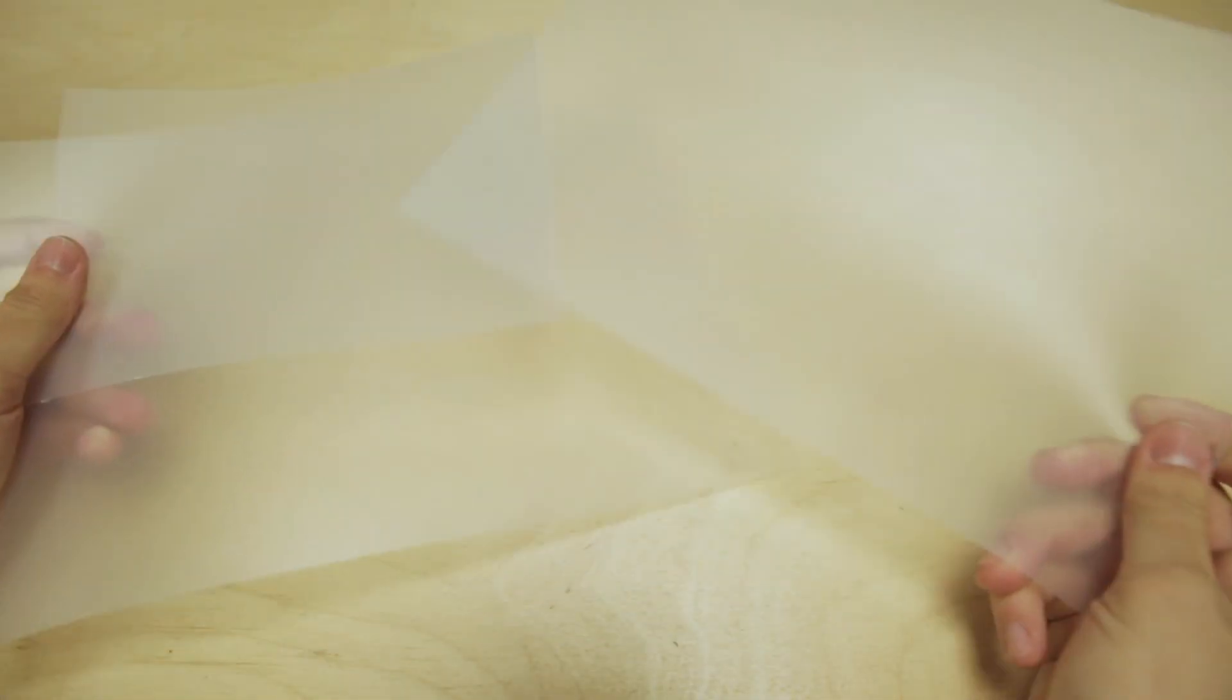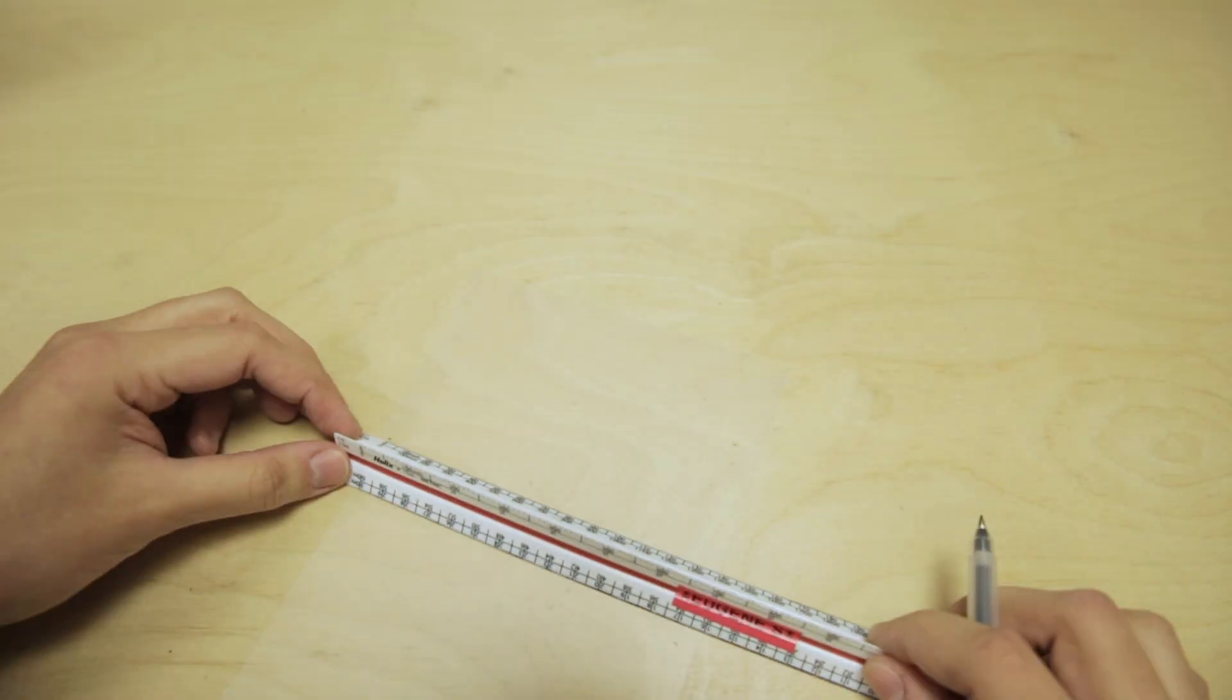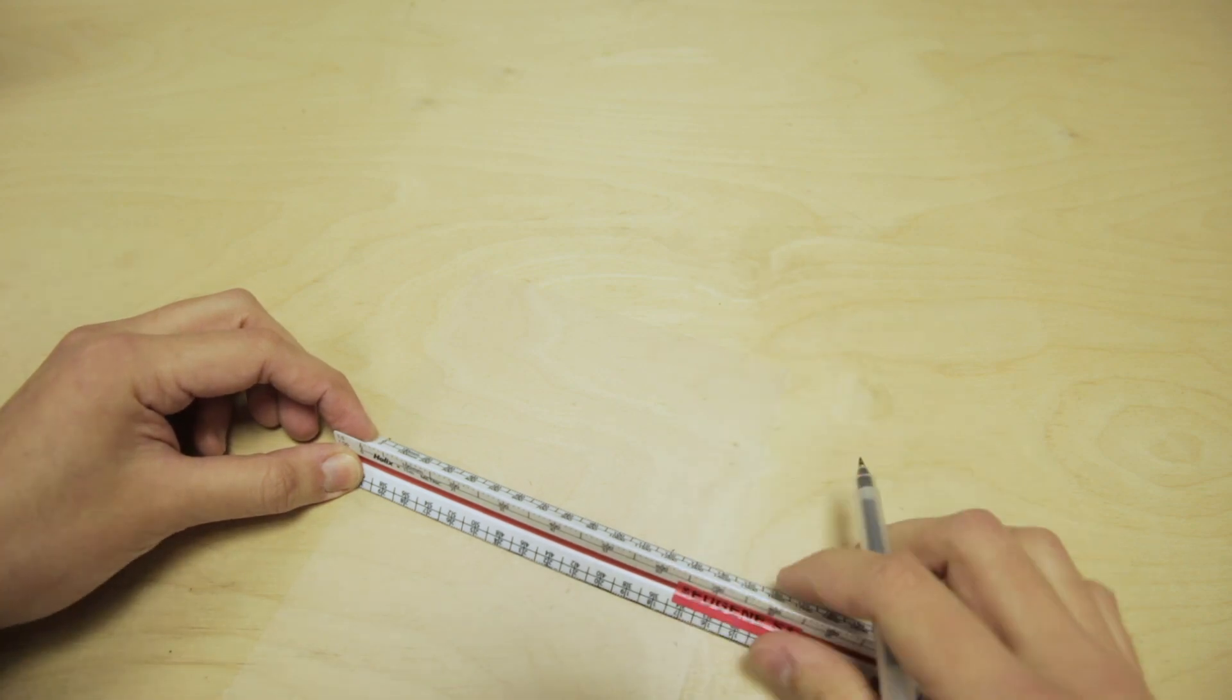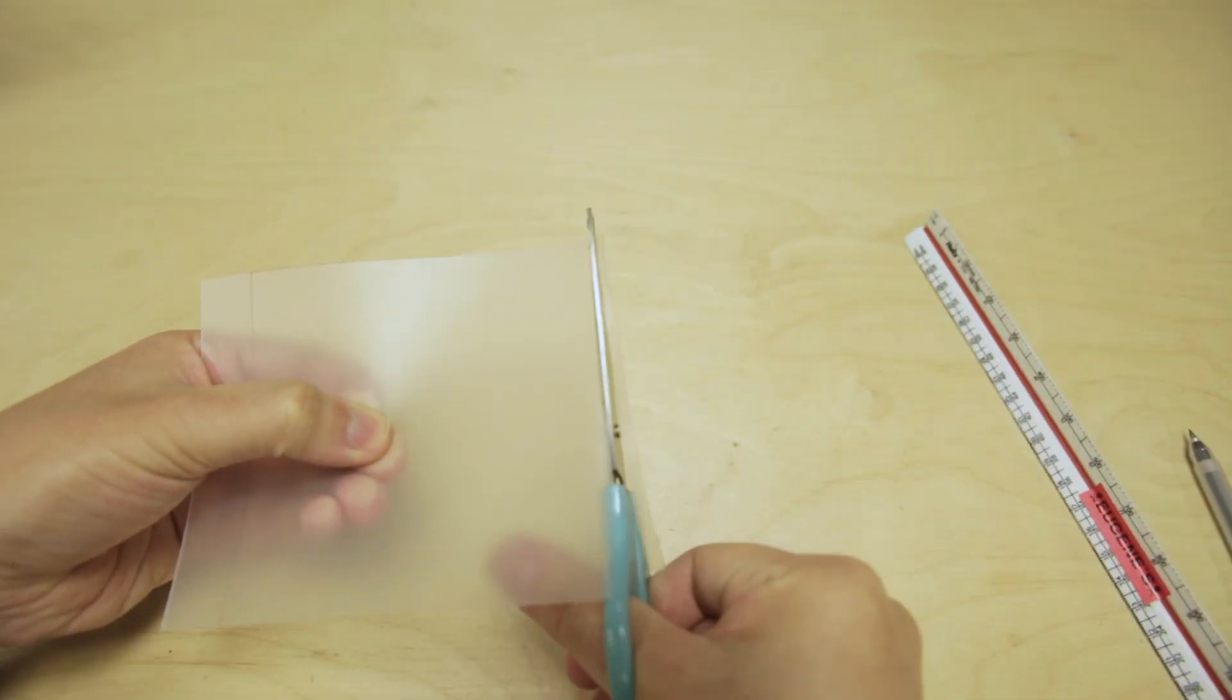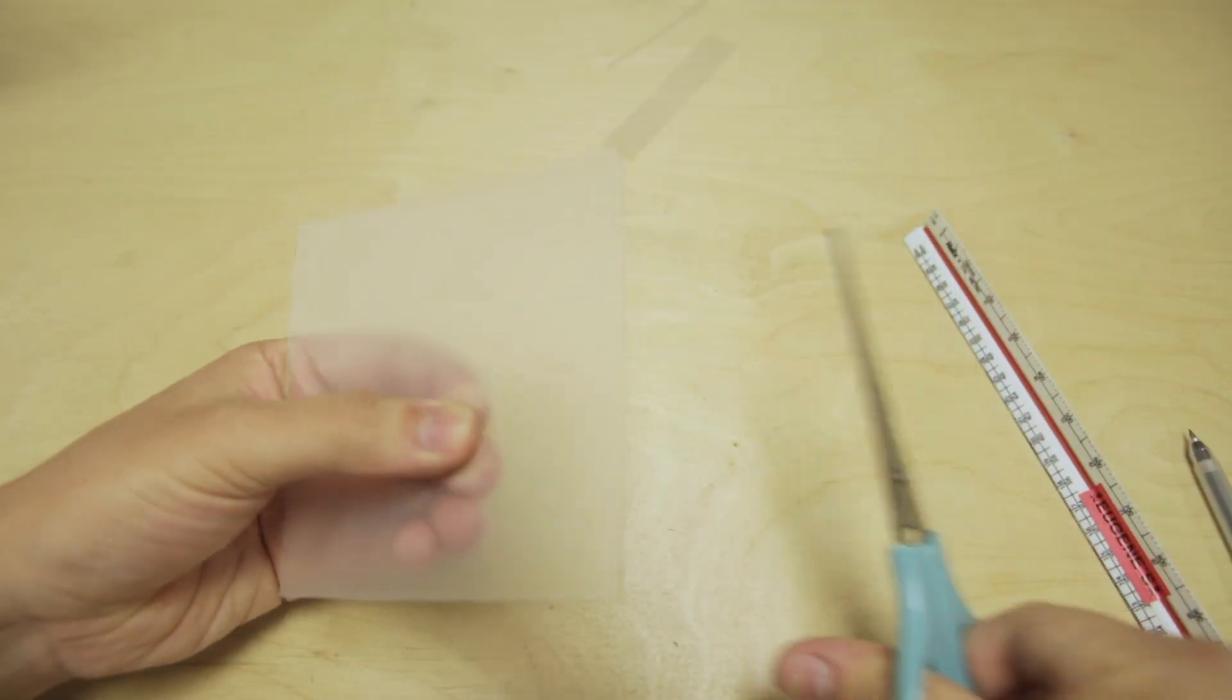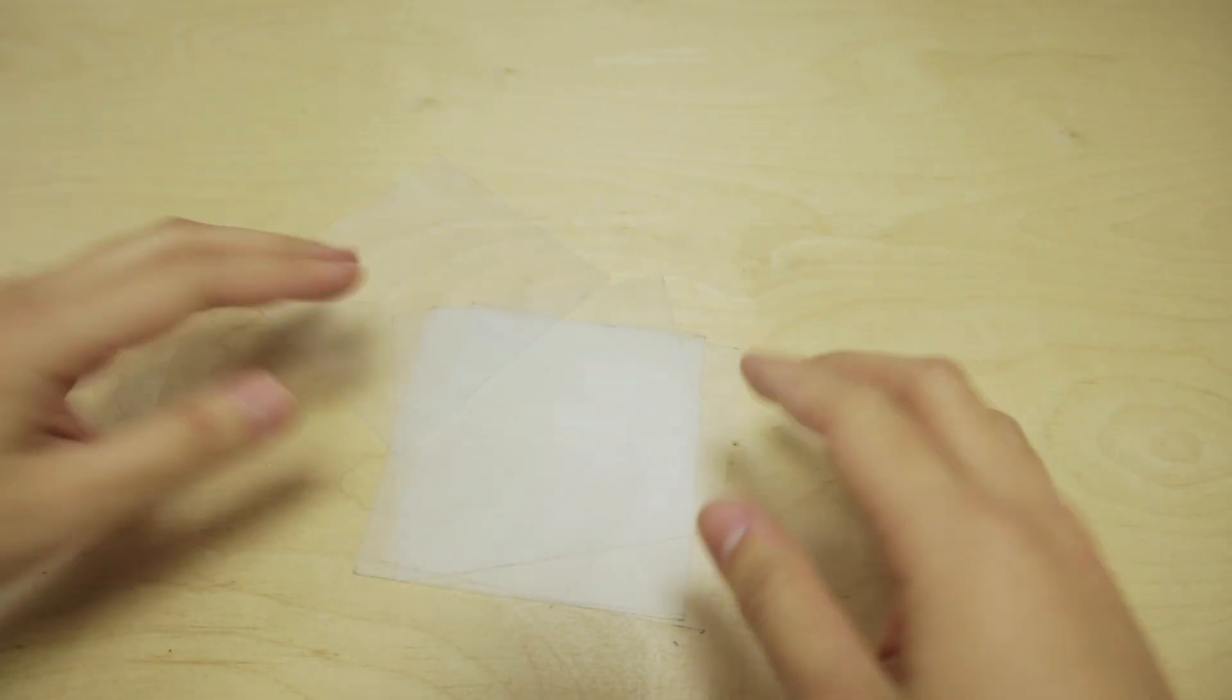Take your sheets of diffusion material and cut out five squares of approximately 120 millimeters by 120 millimeters. There's some magic for you. There you go, all five sheets.